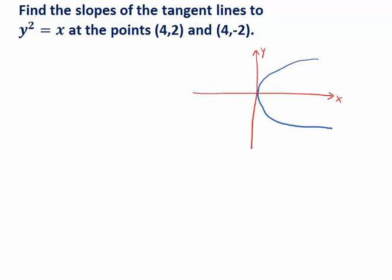But if we want to use calculus, then we want to find the slope of a tangent line, for example, at a point like this. Maybe this is the location of 4 comma 2.